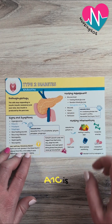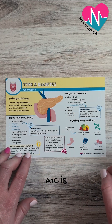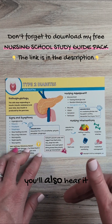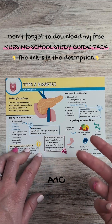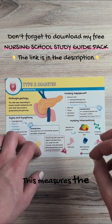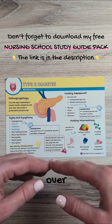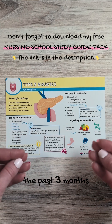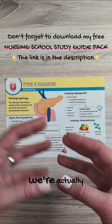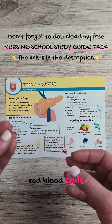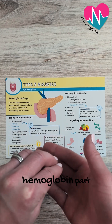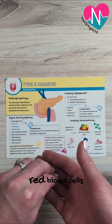Let's walk through what the hemoglobin A1c is. You'll also hear it called just the A1c or the HbA1c. This measures the blood glucose level over the past three months. The way we can do this is we're actually testing the red blood cells and the sugar on the hemoglobin part of those red blood cells.